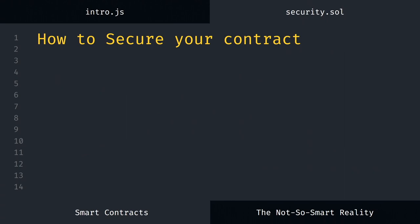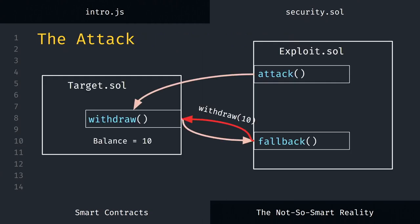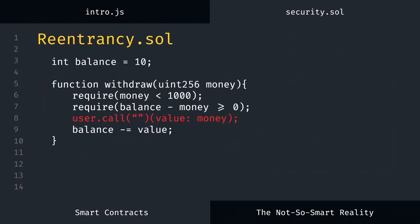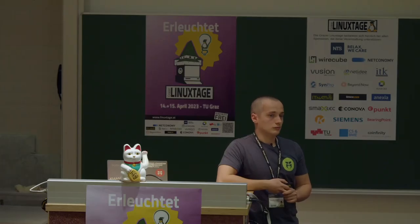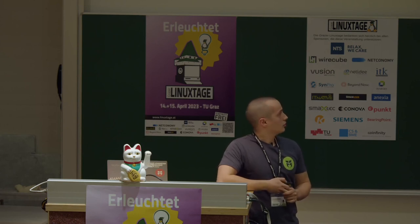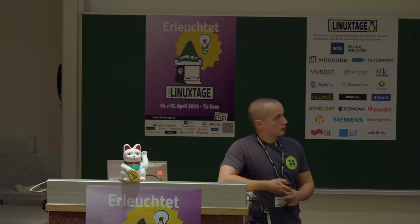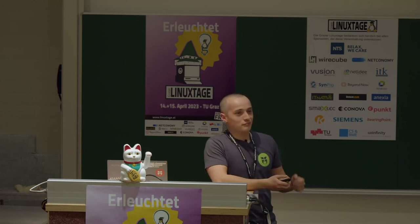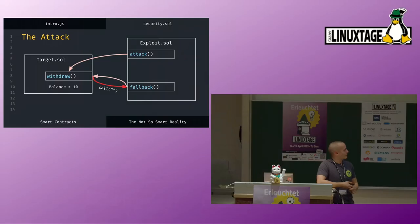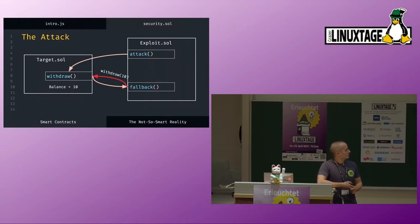There's also another simpler flaw in the same contract — what happens if you withdraw minus 1,000? You could also increase the balance that way. So I even managed to put another bug in there in just five lines of code. That's why it's very important to look at the security of these contracts in very fine detail.